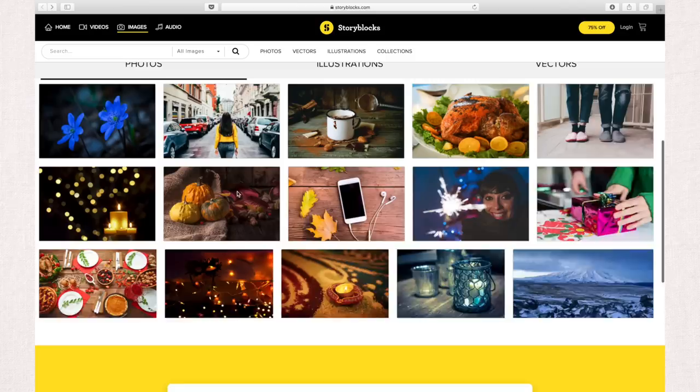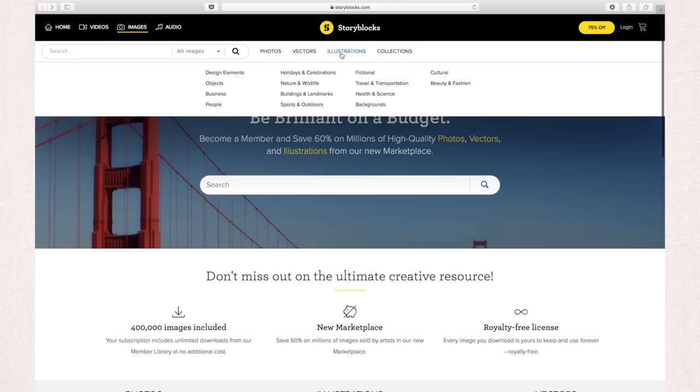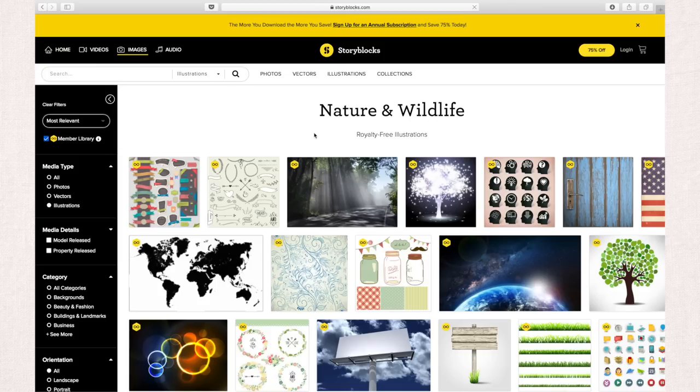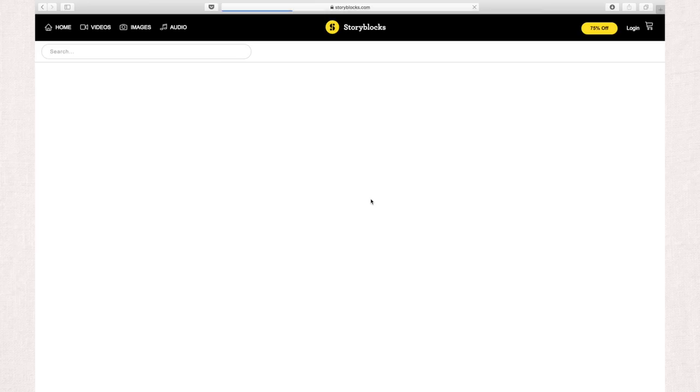Storyblocks is a website where you can download unlimited high-quality, royalty-free photos, illustrations, vectors, icons, and much more. If you sign up as a member, you can download anything from hundreds of thousands of images in their member library and save up to 60% on their marketplace content where you can purchase images directly from the artists.